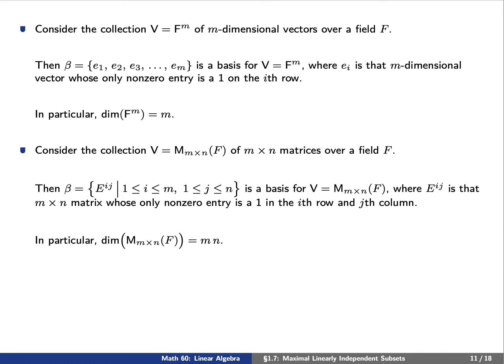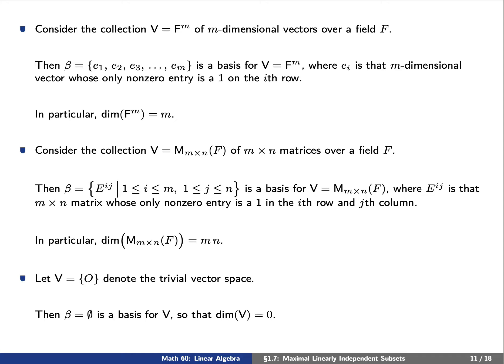Let's consider the collection of m by n matrices. We found before that we can write the standard basis in terms of matrices e^{ij}, and there are m times n of these. So the collection of matrices forms a vector space of dimension m times n. Finally, the trivial vector space consists of just the zero element. The empty set is a basis, and since it has no elements, the trivial vector space has dimension zero. Note that dimension counts the number of elements in a basis for V, not the number of elements in V itself.